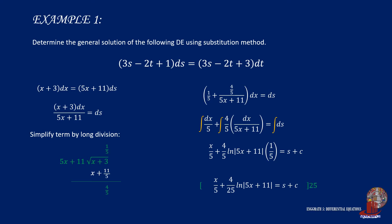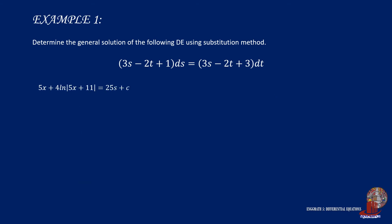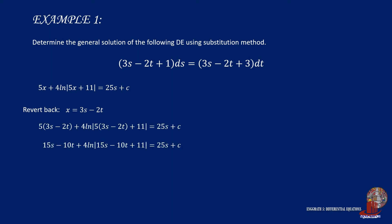Then eliminate the denominator by multiplying 25 to the equation. The resulting function is 5x plus 4 ln of 5x plus 11 is equal to 25s plus c. This is the simplest form possible, so we can now take x as the original value of 3s minus 2t. If we distribute terms, we get 15s minus 10t plus 4 ln of 15s minus 10t plus 11 is equal to 25s plus c.